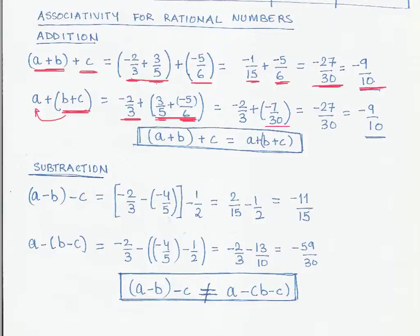And then we add this sum that we have got, minus seven by 30, to minus two by three. And when we simplify this by making the denominator same, we get minus 27 by 30. And simplifying it, we get minus nine by 10.